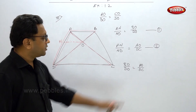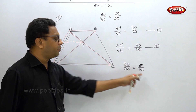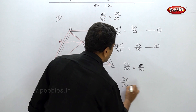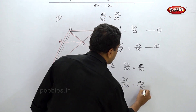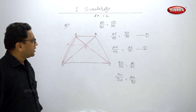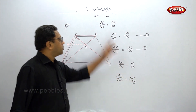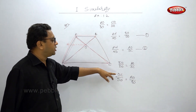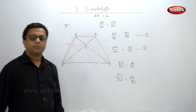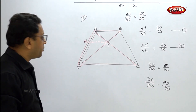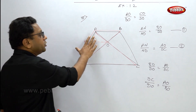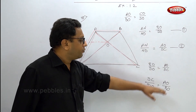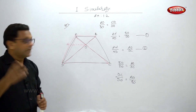Cross-multiplying and rearranging, OC/DO = AO/BO, and finally AO/BO = CO/DO — proved. This is how we use BPT on two different triangles and combine equations 1 and 2 to get the answer.